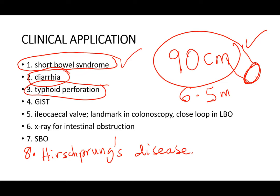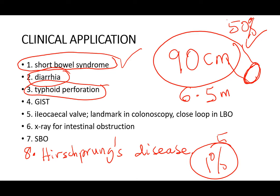Gastrointestinal stromal tumor (GIST) is a malignant condition affecting the intestines. It accounts for 1% of all gastrointestinal malignancy, of which 50% are located in the stomach. The next most common location is the small intestine. GIST is a cause of intestinal obstruction, and in the stomach it can cause gastric outlet obstruction.